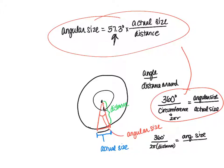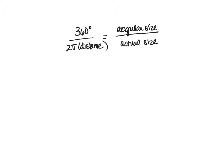So we have 360 degrees over 2π times the distance equals the angular size over the actual size. Let's rearrange this so that we can get back to the expression we were looking to derive.